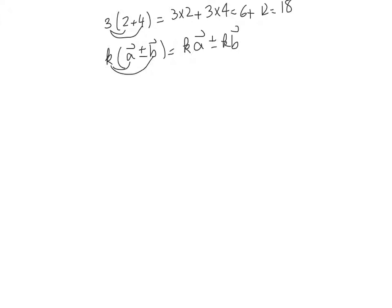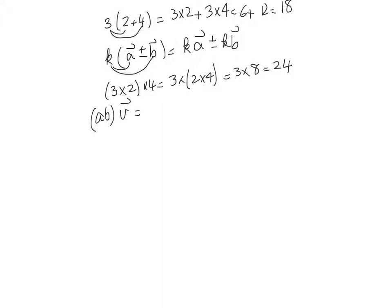We also have the associative property. To refresh your memory, 3 times 2 times 4 is the same as 3 times 2, times 4 — the associative property — which is 3 times 8, which is 24. With vectors, it is the same thing too. If we have two scalars, a and b, and we multiply a times b by a vector v, this is the same as a times b times v. This is the associative property of vectors.